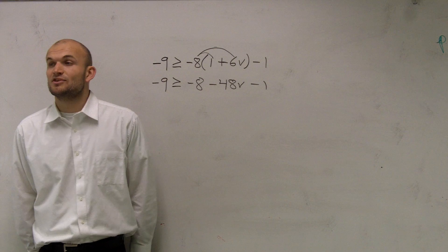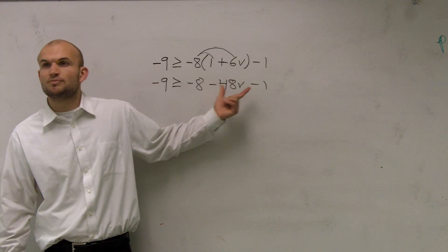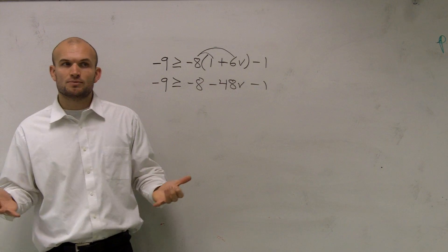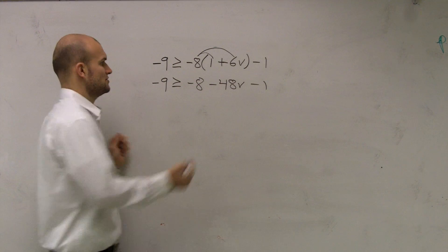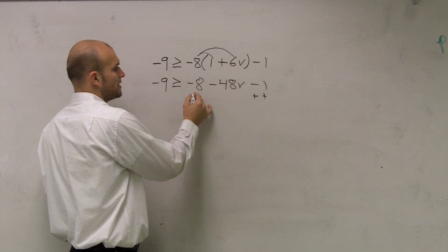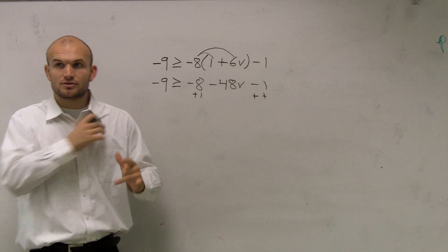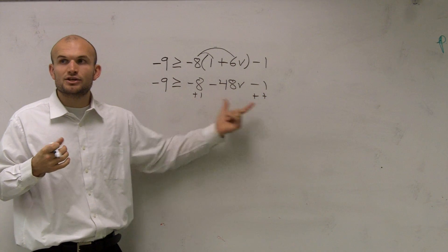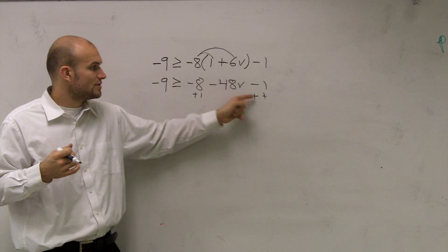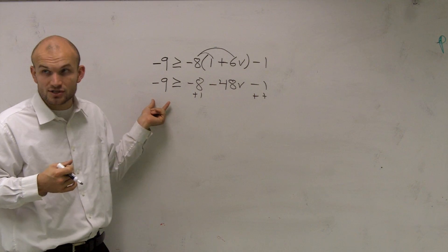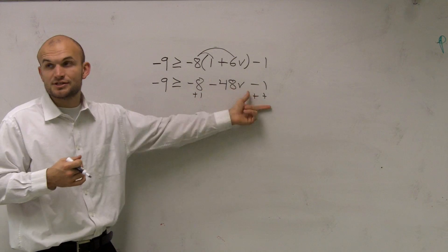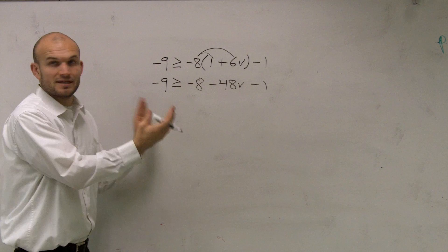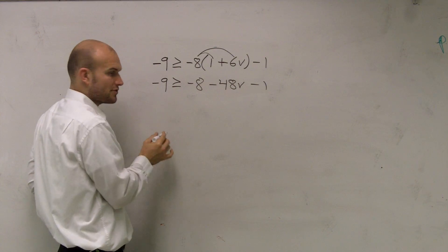A lot of these multi-step problems are very confusing, and the reason why is they put multiple terms on the same side. The biggest mistake students make is they say, 'I can add 1 to both sides,' but you have to make sure that when you're doing your additional properties of equality, you do it on one side of the inequality and then the other side. Doing it to the same side is an invalid step. When terms are on the same side of the inequality, just rearrange them so they're next to each other.